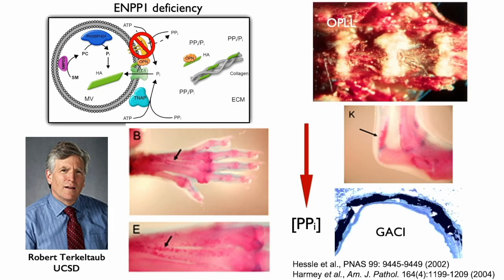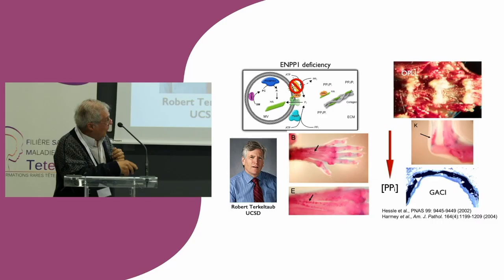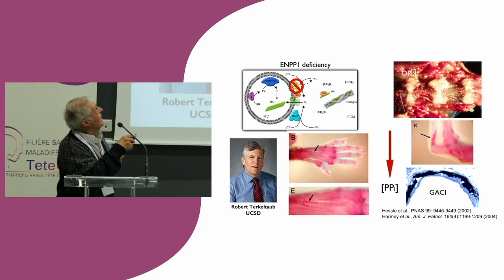What happens if we knock out ENPP1? This was done in collaboration with Bob Turkelthorpe at UCSD. Here you have soft tissue calcification, low levels of pyrophosphate. Your skin calcifies, ligaments of the spine calcify, tendons calcify, and your vasculature calcifies. ENPP1 deficiency leads to generalized arterial calcification of infancy, a very severe disease. That is all due to low levels of pyrophosphate — you're lacking the enzyme that produces pyrophosphate.